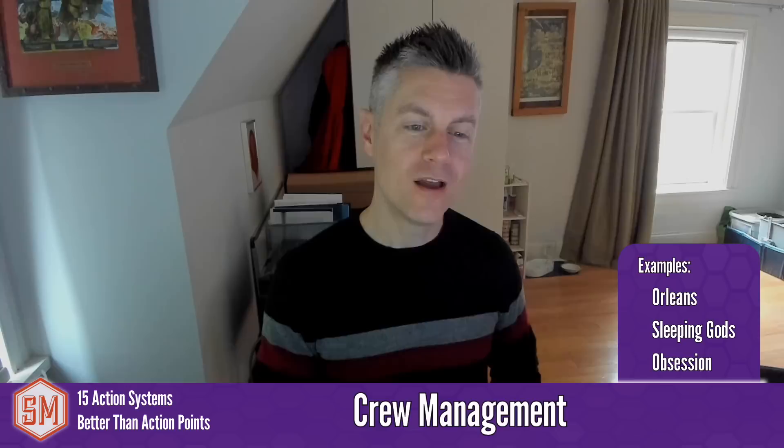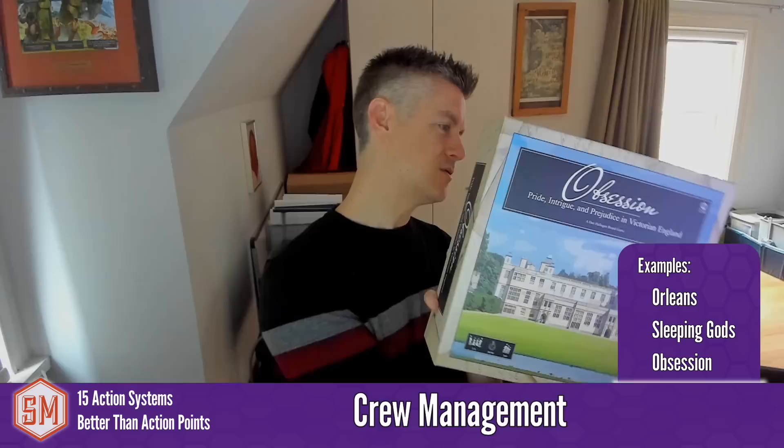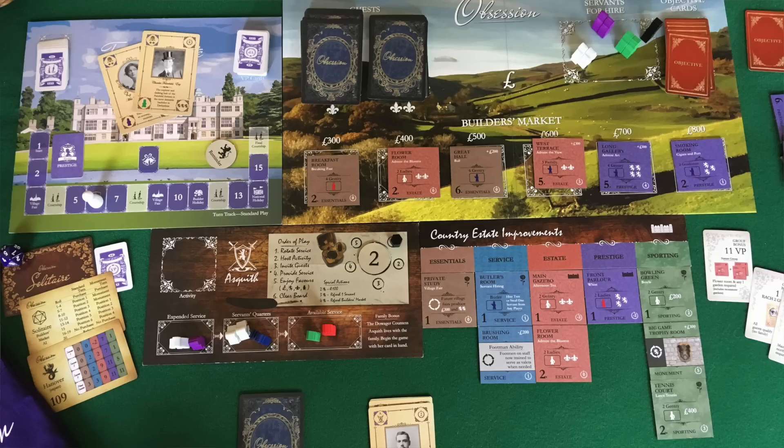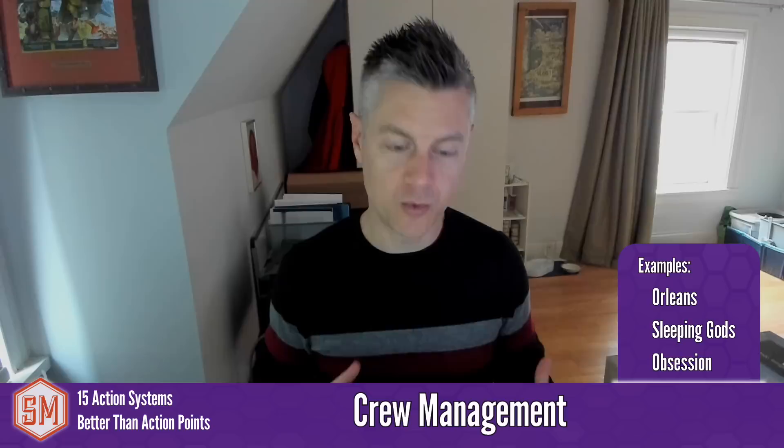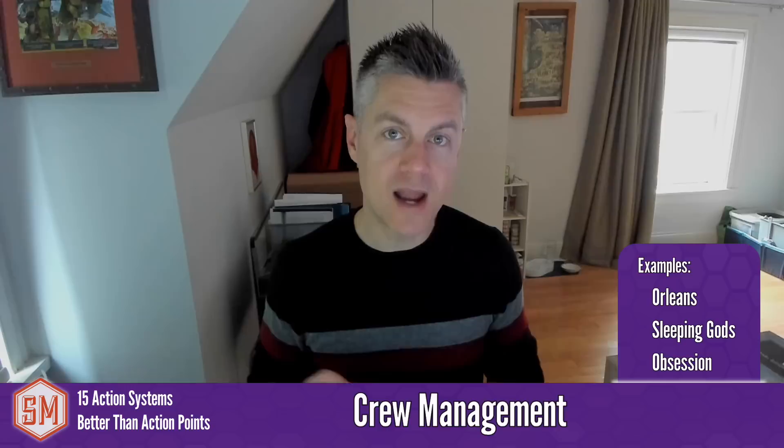Also in Obsession, you have a staff on your estate. You use a staff member, and then every turn staff members you previously used move forward on a mini track on your player mat until they become available again — they're busy doing that task for a while, and then you get them back. So there are lots of different crew management systems where the actions are associated with tokens, meeples, or cards, and you activate those specific actions associated with those characters or staff members on your turn.